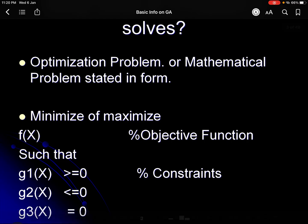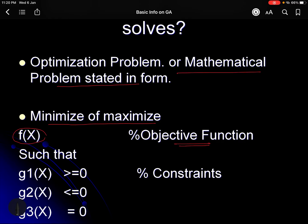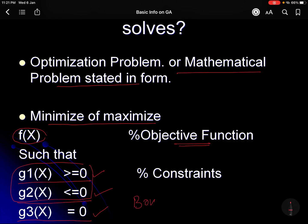Let us see what kind of problem GA solves. I will first define what is meant by an optimization problem — a mathematical problem which GA solves. GA solves problems stated as: either minimize or maximize a function f(x), which is called the objective function, such that certain constraints are also satisfied. The constraints can be expressed as greater than or equal to, less than or equal to, or equal to type.